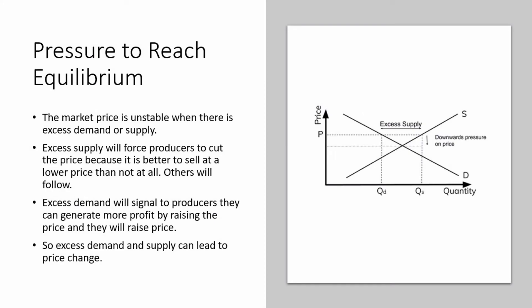Pressure to reach equilibrium. The market price is unstable when there is excess demand or supply. Excess supply will force producers to cut the price because it is better to sell at a lower price than not at all. Others will follow. Excess demand will signal to producers they can generate more profit by raising the price, and they will raise price. So, excess demand and supply can lead to price change.